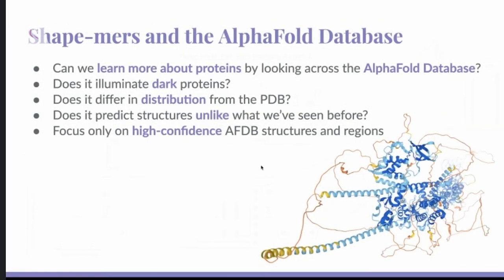Okay, so then that was the protein family perspective. Now what can we say about the universe from a structure point of view? So can we learn more about proteins by looking across the entire AlphaFold database? And how does it differ from the PDB? Like, what have we gained compared to the PDB? Or what does the PDB have more than AlphaFold for some reason? And are there predicted structures which are completely different from what we've seen before? And so to do this analysis, I focused only on the high confidence AlphaFold structures. So more than 90 average pLDDT and high confidence regions as well. So I did not look at shape-mers from these loopy regions, which would also not make sense from a shape-mer point of view, since they're not fully structured.